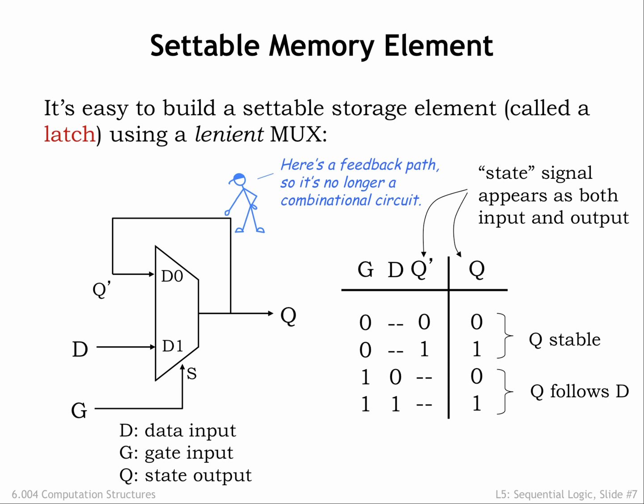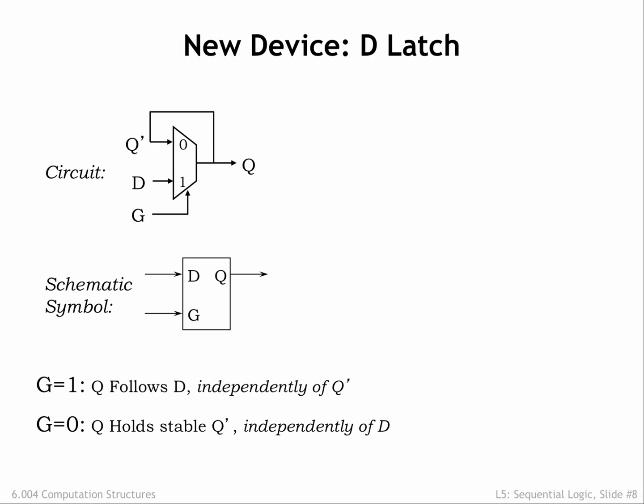While the G input is high, any changes in the D input will be reflected as changes in the Q output, with the timing determined by the TPD of the MUX. Then we can set the gate input low to switch the memory component into memory mode, where the stable Q value is maintained indefinitely by the positive feedback loop, as shown in the first two rows of the truth table. Our memory device is called a D latch, or just latch for short, with the schematic symbol shown here.